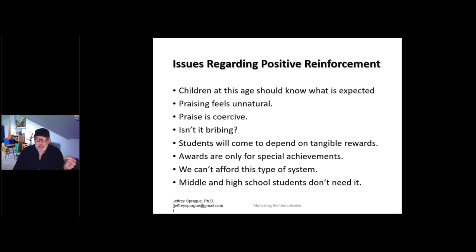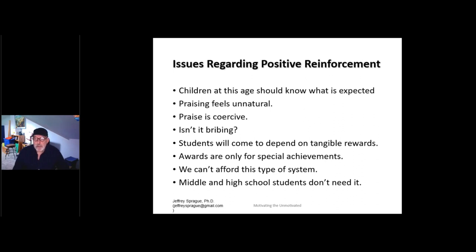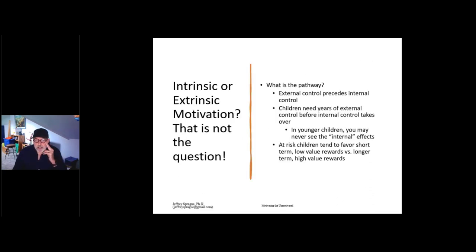Awards should only be for special achievements — nice idea, but a lot of kids who experience frequent failure probably want to lower the bar enough for them to feel success. We often use something called the 80-20 rule, where a student should be successful 80% of the time if possible. Schools are concerned about having money to give a bunch of tangibles. And a lot of people think by the time you're in middle or high school you don't need it. We value intrinsic motivation, but developmentally that internal control is preceded by years of external control.